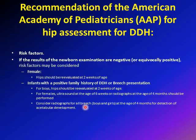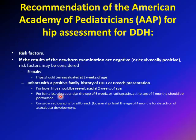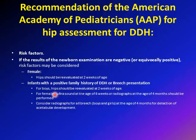You may also consider getting an x-ray for all breech newborns — boys or girls — at four months to assess acetabular development, though this is not a strict recommendation. To summarize: a female with breech presentation or family history of DDH, even with a negative or equivocal exam, should get an ultrasound at six weeks of age.